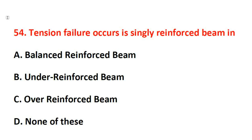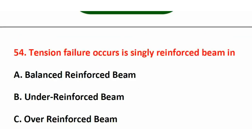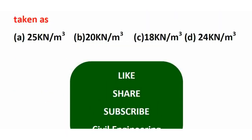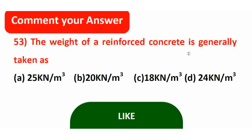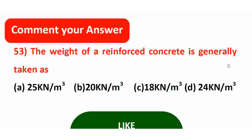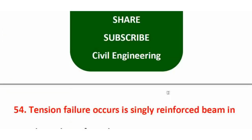In this video, let us discuss previous questions about RCC. From the last video: the weight of reinforced concrete is generally taken as 25 kN per m³. The reinforced concrete unit weight is 25 kN per m³. In case of PCC, it is 24 kN per m³.